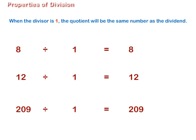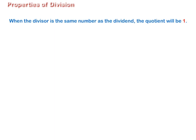209 divided by 1 is equal to 209. When the divisor is the same number as the dividend, the quotient will be 1.